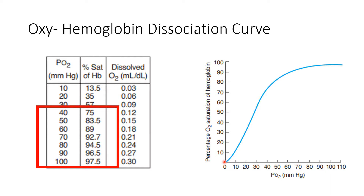At various PO2 levels, we can see how the hemoglobin saturation percentage changes. For example, at around 30 mmHg, hemoglobin saturation is approximately 50%. At 40 mmHg, hemoglobin saturation is around 75%. And at 100 mmHg, it is around 97–98% saturated.